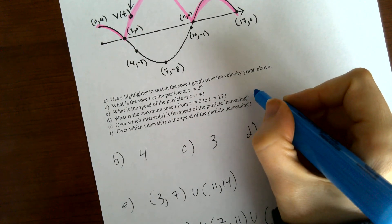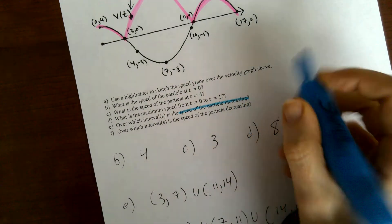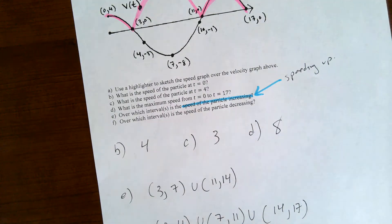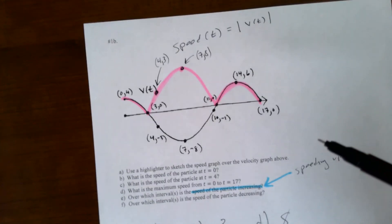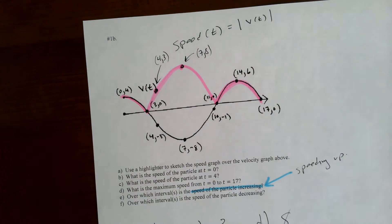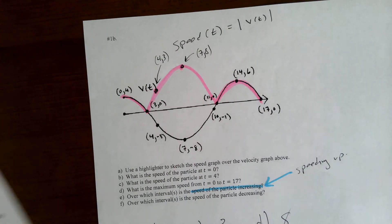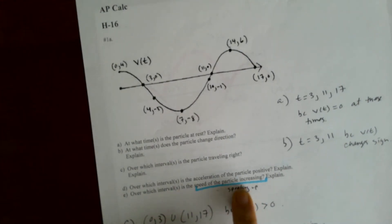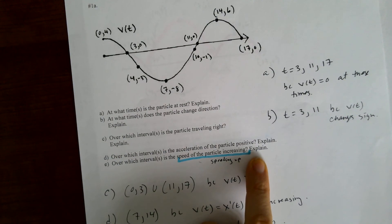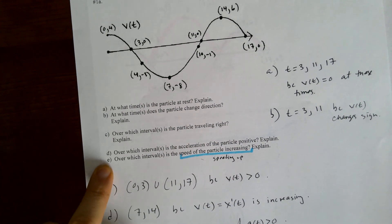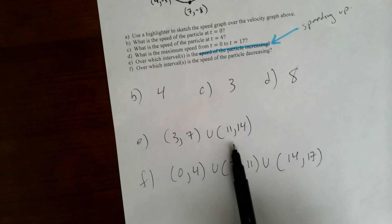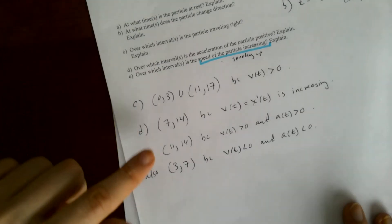I just want to point something out. Speed of the particle increasing — that is the same as speeding up. So using the speed graph like we just did, or taking the absolute value of the velocity graph, is another way of figuring out this same question. Part e, over which intervals is the speed of the particle increasing — this part e here is really the same, and we should have the same answers: 3 to 7, 11 to 14.